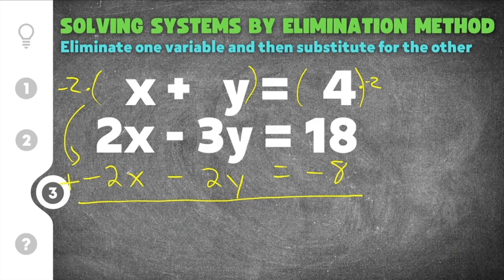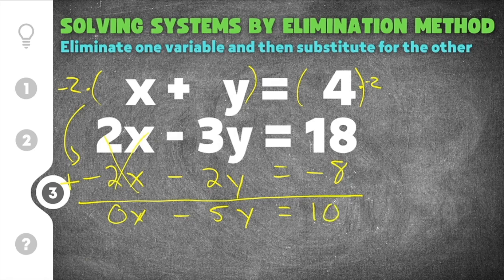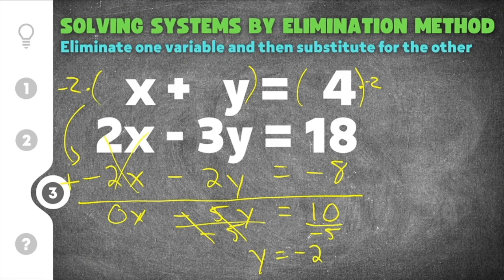Adding the equations: 2x plus negative 2x cancels to 0x, so that goes away. Then negative 3y plus negative 2y is negative 5y, and 18 plus negative 8 is positive 10. So we have negative 5y equals 10. Dividing both sides by negative 5, we get y equals 10 divided by negative 5, which is negative 2.